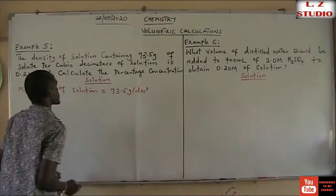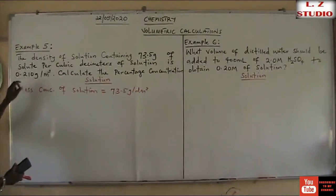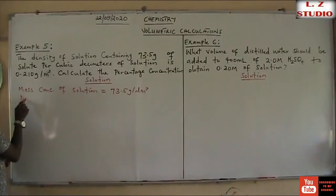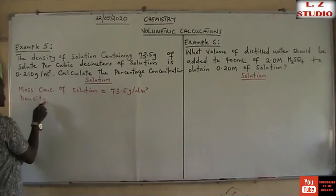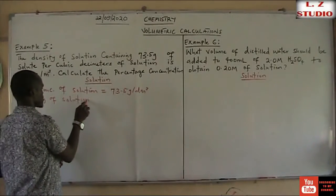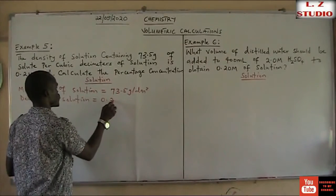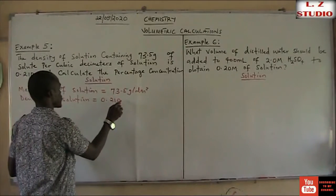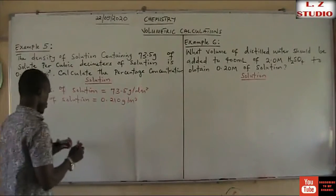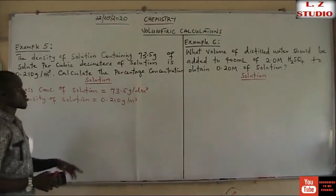After that, you get to realize that the density of the solution given is the density of the solution, which equals 0.210 grams per metre cube.